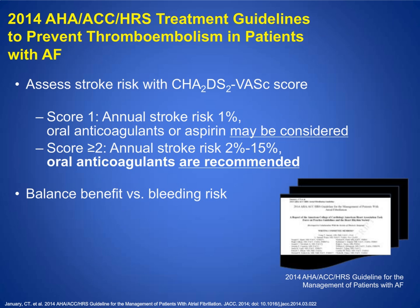In 2014, the American Heart Association, ACC, and HRS created guidelines to help physicians decide which patients should be on anticoagulation therapy. If you have a score of one, you can recommend aspirin or consider anticoagulants. But for patients with a CHA2DS2-VASc score of at least two, they should be on anticoagulation therapy — they have an annual stroke risk of anywhere from two to fifteen percent.